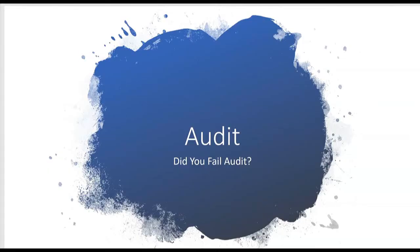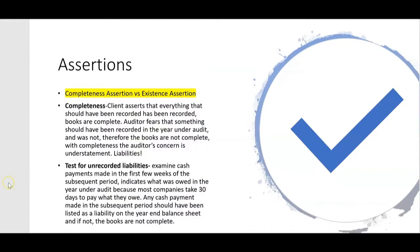Did you fail audit? If you failed audit, it's probably because they asked you some basic questions that are always on the exam and you just didn't know what to do because you studied something else. If you failed audit, you're probably very weak on audit assertions — in particular, the completeness assertion versus the existence assertion. The first thing I ask a new tutoring student in an audit session is: tell me what you know about the difference between completeness and existence.